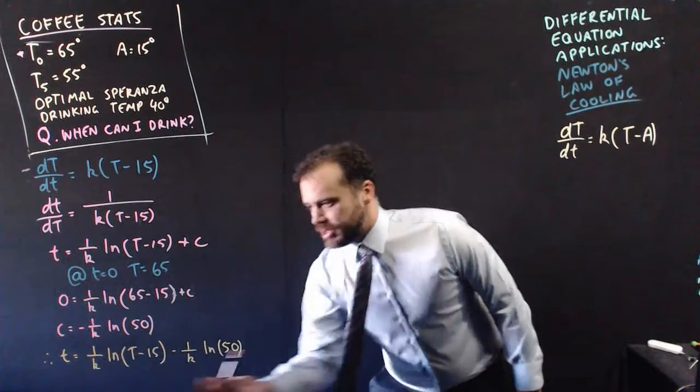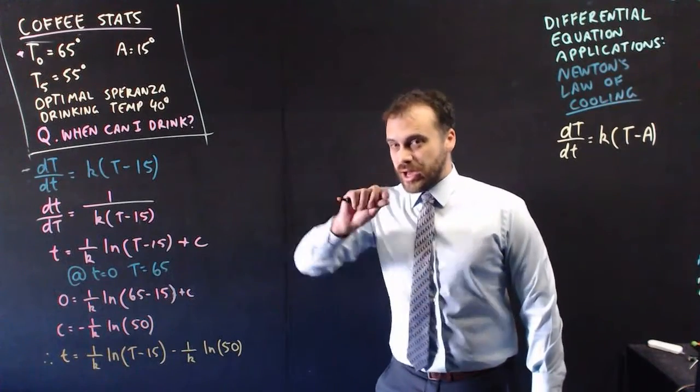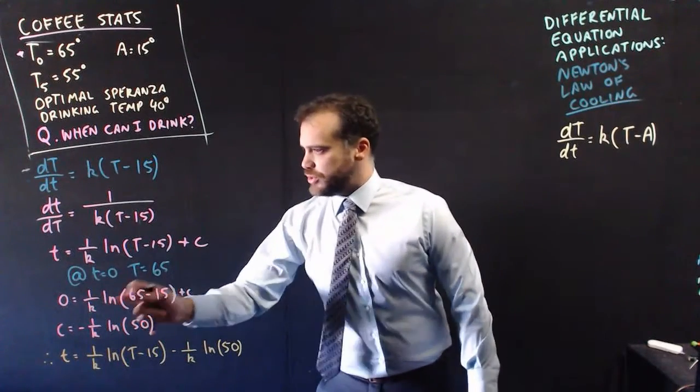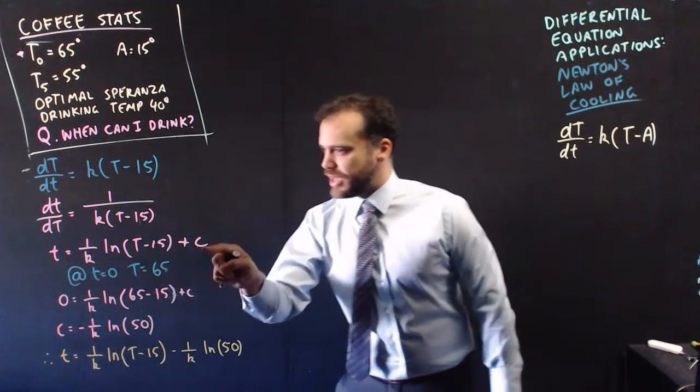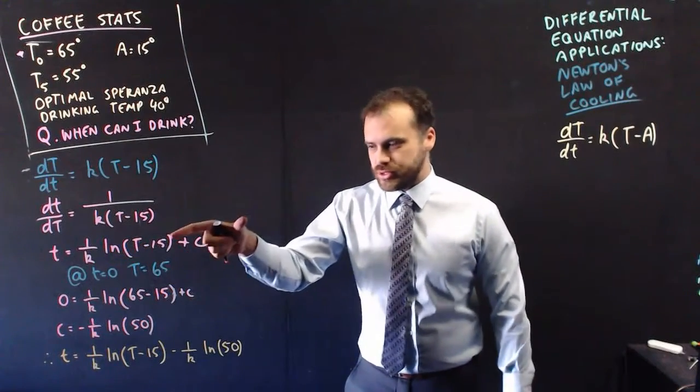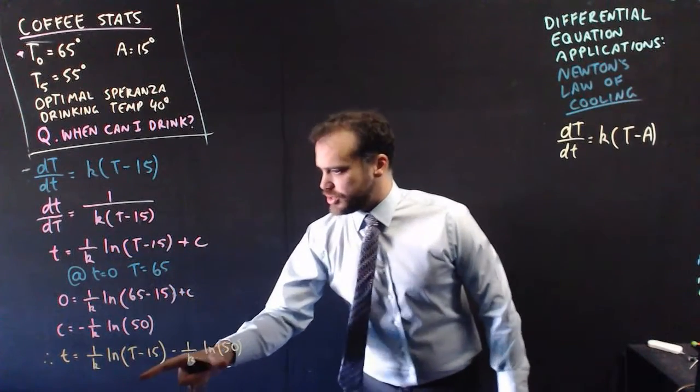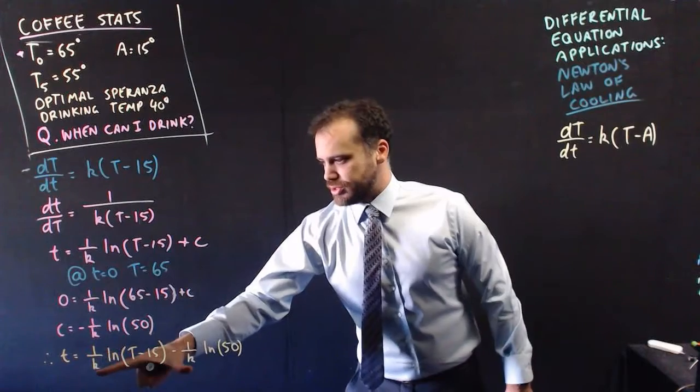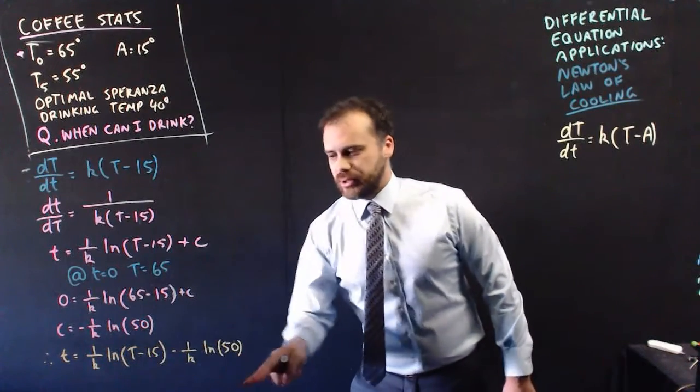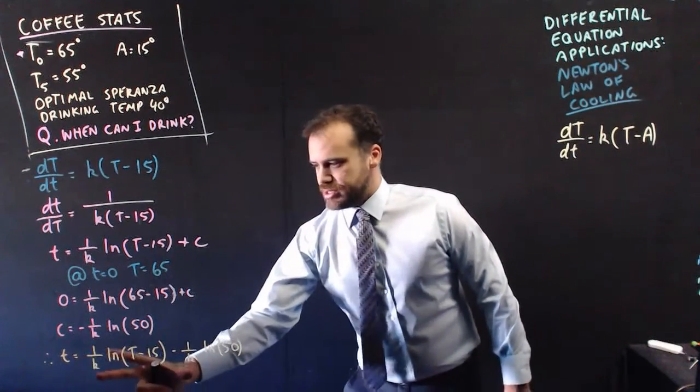So this is quite nice, but it's not the end yet. But it is progress, right? Because we used to have an equation that had a k and a c in it, two unknown constants. Now we've got an equation with only one unknown constant.